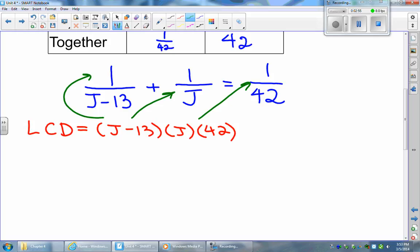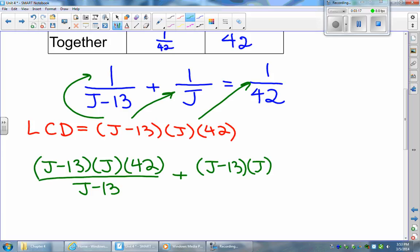Now if we're multiplying by 1, we don't actually have to include the 1. So we have 1 times j minus 13 times j times 42 divided by j minus 13. Remember when you're multiplying on both sides of the equation, you only need to do it to the numerator. Plus j minus 13 times j times 42 divided by j.